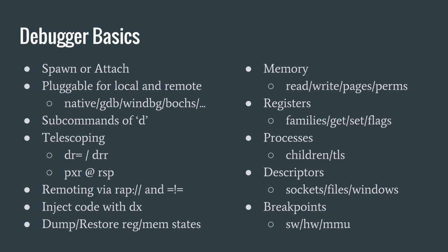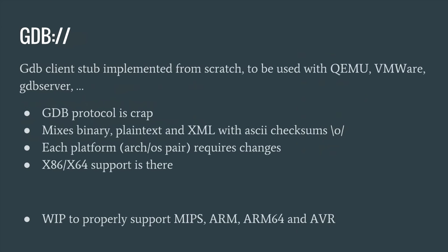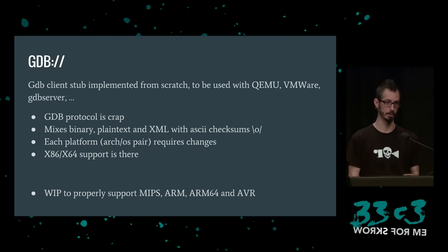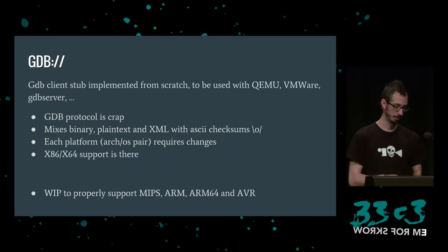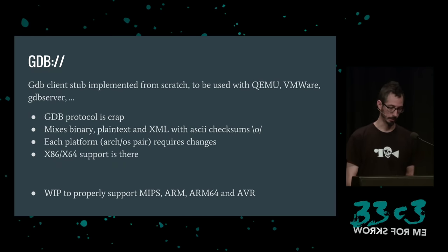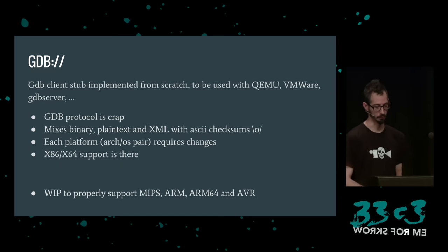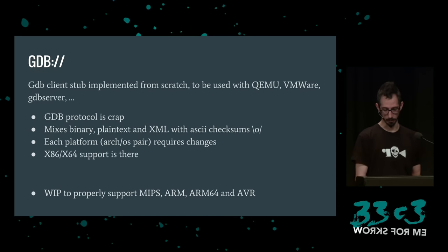The GDB backend is not working on all platforms, mainly because the GDB protocol is poor — it mixes binary, plain text, and XML in a single protocol, which is a bad design decision. Every platform reimplements this differently, so connecting to a new platform requires different solutions for reading/writing registers, memory, stepping, and setting breakpoints. Right now it mainly supports Intel, so you can use it for debugging Windows or Linux kernels attached to QEMU. Work in progress for MIPS, ARM, and AVR.